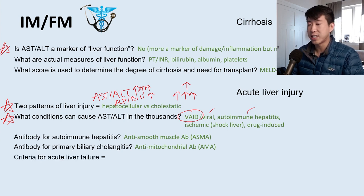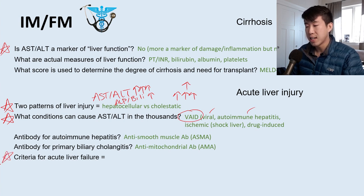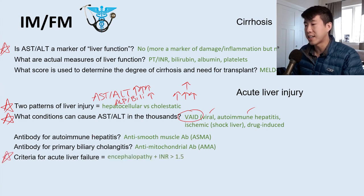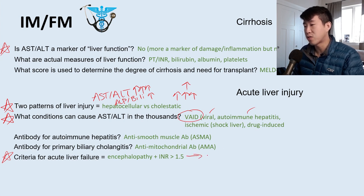Criteria for defining acute liver failure: only two — encephalopathy and an INR greater than 1.5. If someone meets criteria for acute liver failure, you need to consider whether they need emergent transplant.